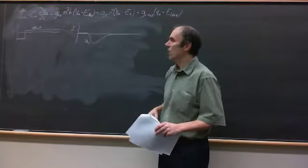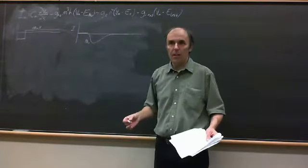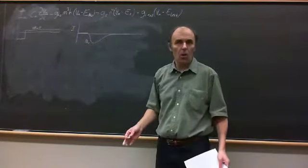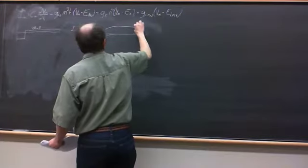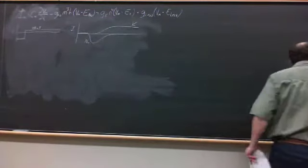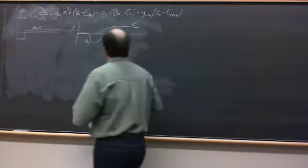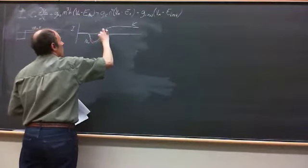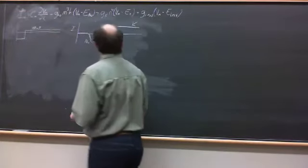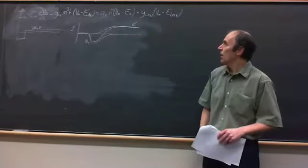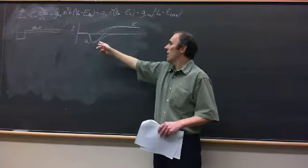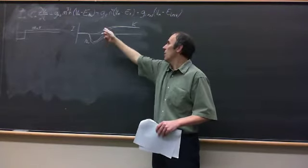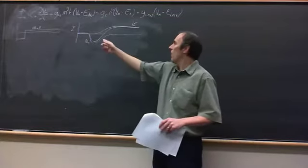At +10 millivolts, potassium current flows outward but turns on slowly, rising in a sigmoidal fashion. The sum of sodium and potassium currents gives the total current you'd see in the experiment. To separate them individually, you'd need an additional experiment such as replacing the sodium in the bath.